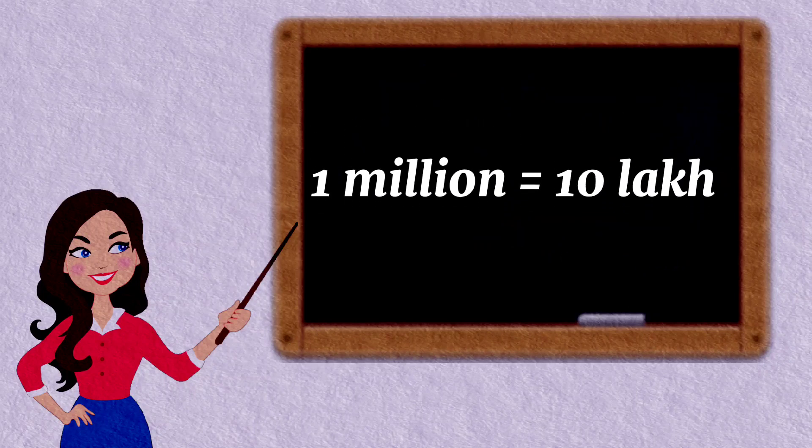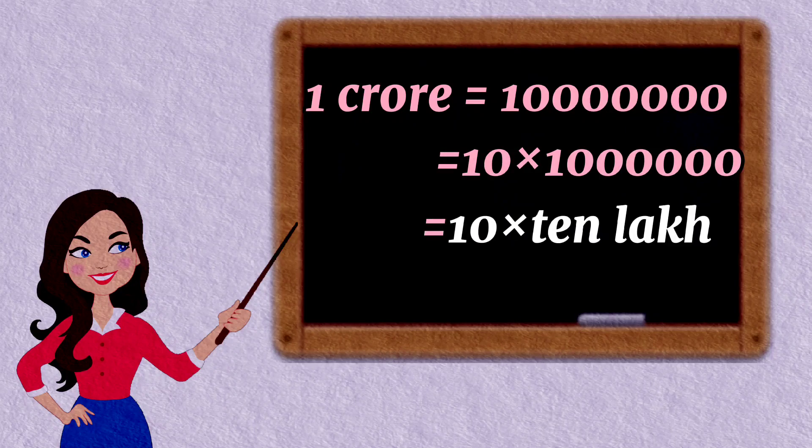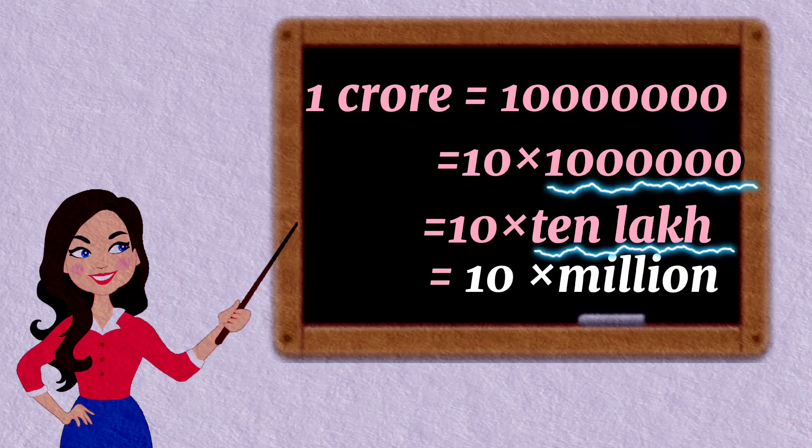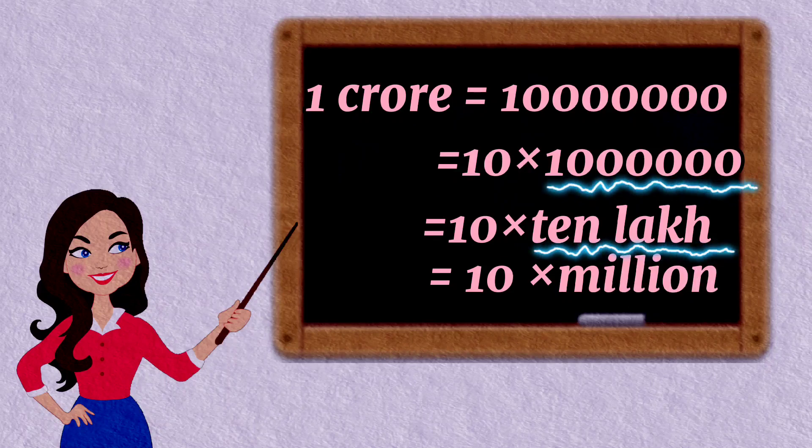One crore is equal to ten into ten lakh. One crore is equal to one followed by seven zeros, which is equal to ten into ten lakh. We know that one million is equal to ten lakh, so we can write ten into ten lakh as ten into one million. Hence one crore is equal to ten million.